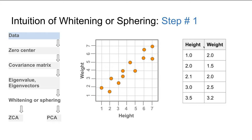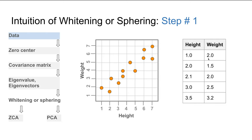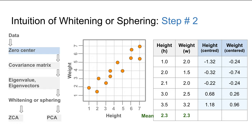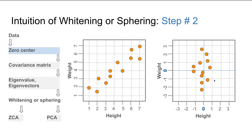Here we have a dataset of height and weight — a couple of data values. Note that the values shown in the table do not necessarily correspond to the dots shown in the plot. As a first step, we zero-center the data. The data goes from one to seven for height and one to seven for weight. We subtract the mean height from all height data points and the mean weight from all weight values, giving us height-centered and weight-centered data. Once we center the data, the zero is in the center of the dataset.